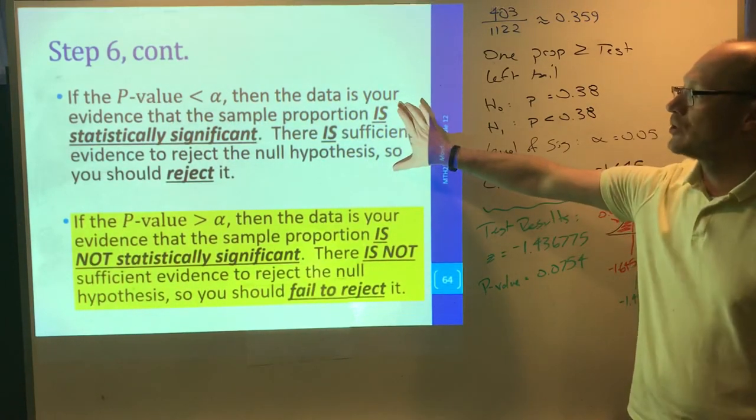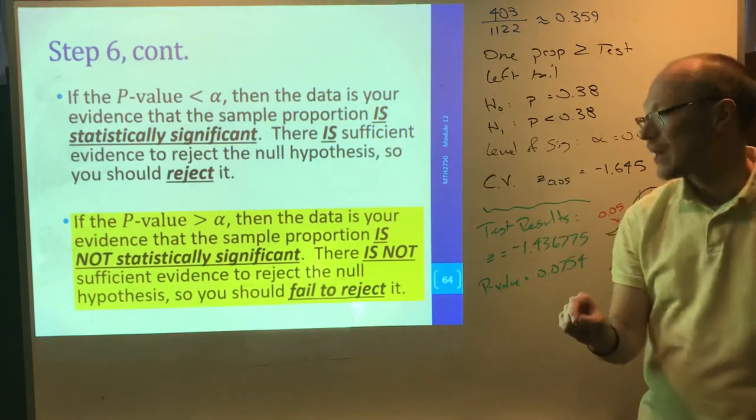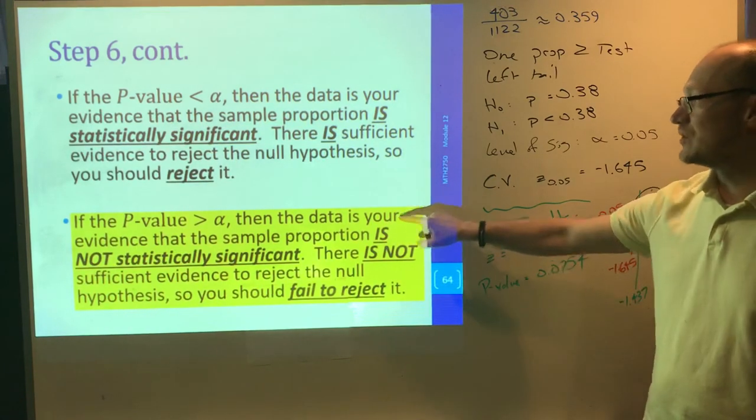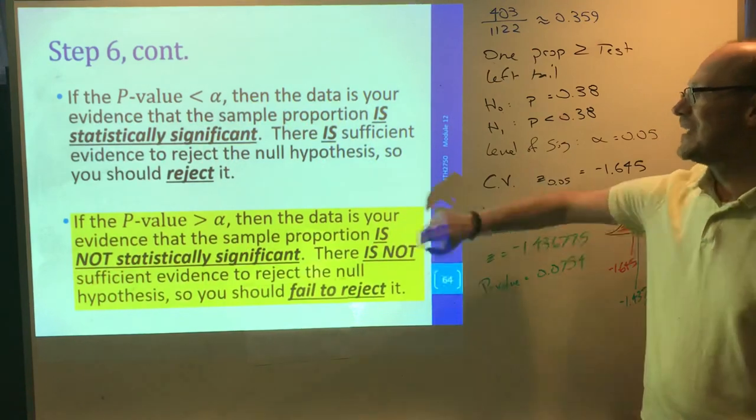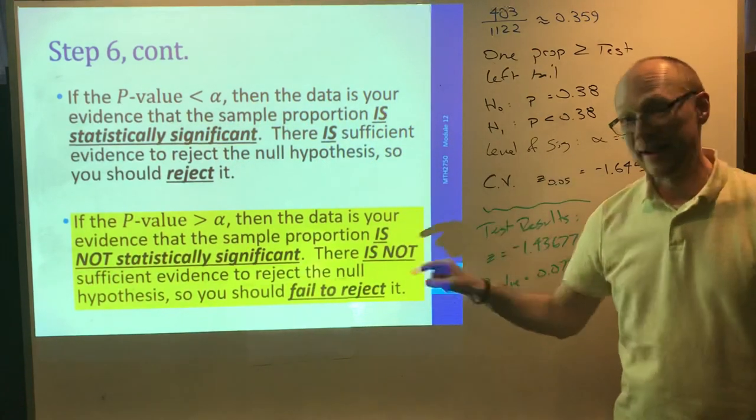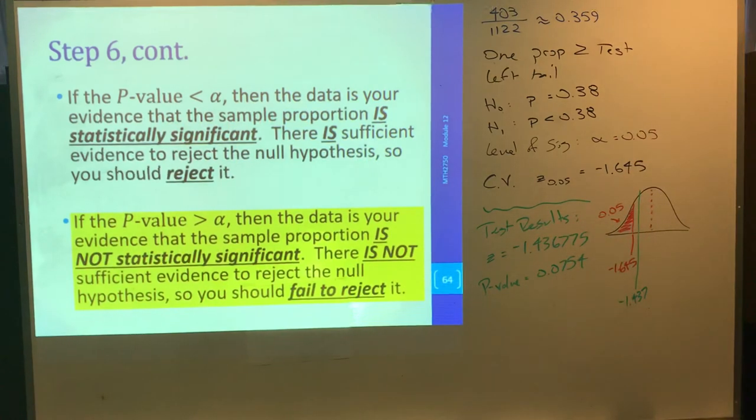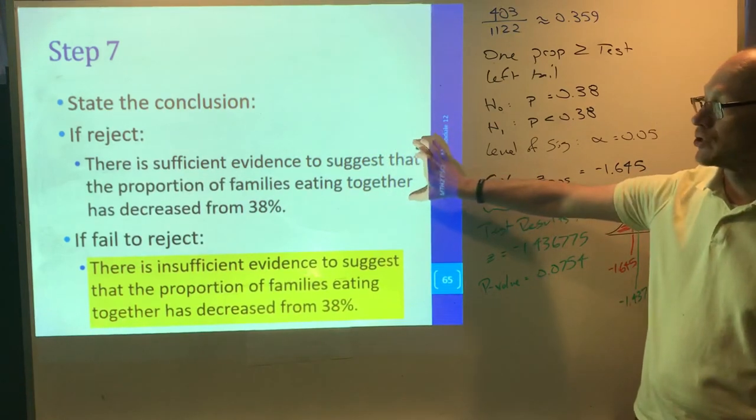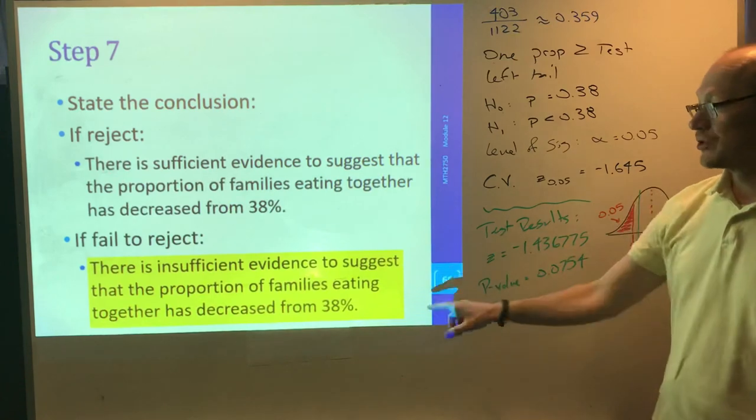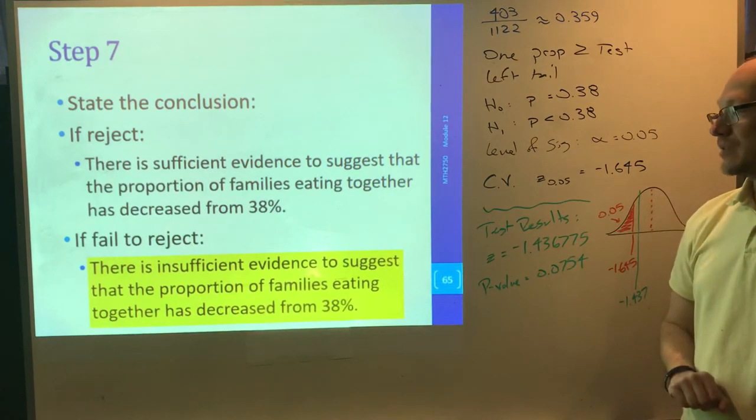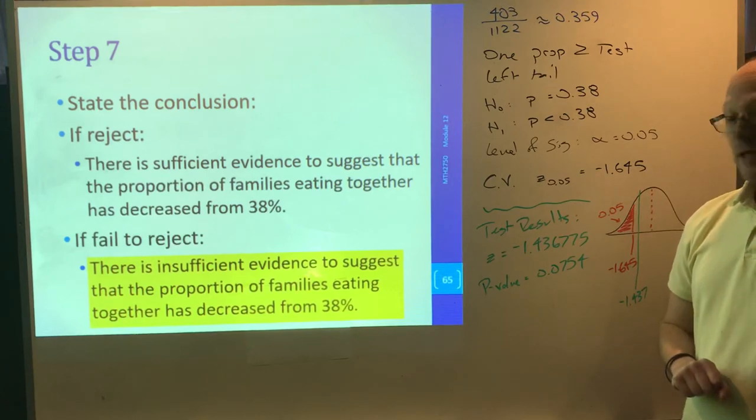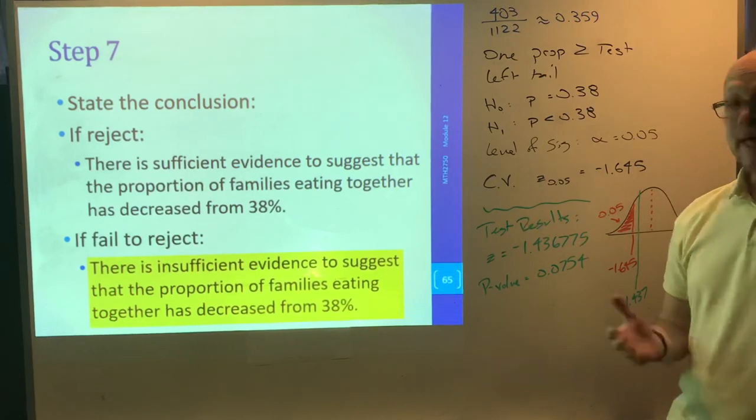In both cases, because the boundary was within, because the probability was big enough, we have failed to reject. In this particular question, we chose to fail to reject. We are failing to reject this, which means we can state our conclusion. There is insufficient evidence to suggest that the proportion of families eating together has decreased from 38%. That is the process.